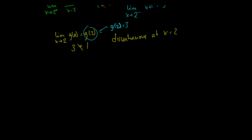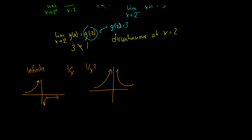Now there are two more types of discontinuities. There's an infinite discontinuity, which occurs when a function goes to infinity or negative infinity at some point — like 1 over x, or 1 over x squared, where both sides go to infinity at 0. These are not removable because you can't simply define a single point value when the function goes to infinity.